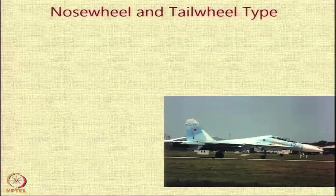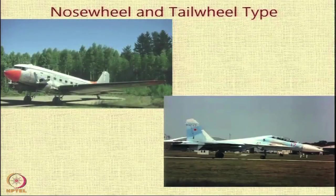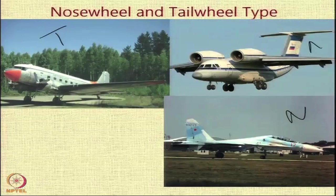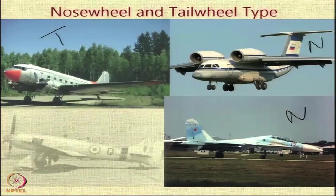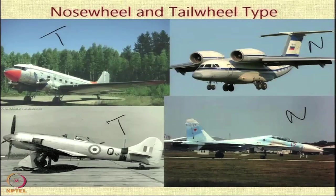Let us have a look at some examples of nose wheel and tail wheel type aircraft. You can see examples of the tail wheel type and the nose wheel type. As you can see, these are older generation aircraft. Most aircraft seen today are the nose wheel type, and both the nose wheel and main wheel can have a single wheel or multiple wheels.